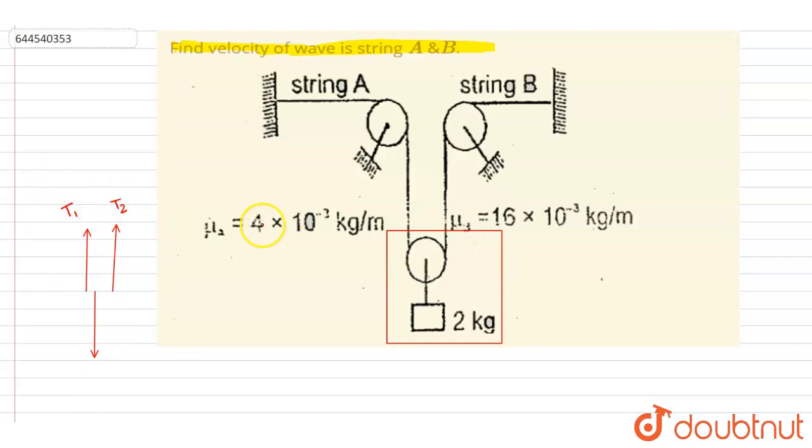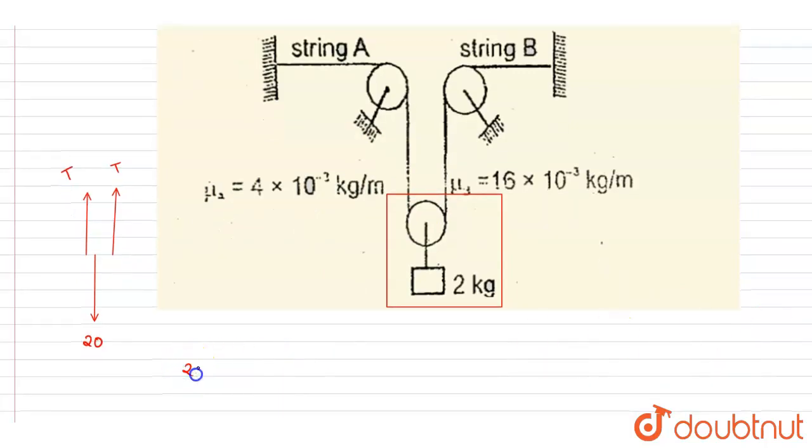Since the string mass per unit length is so small, we can assume the string tension is the same throughout. So we write 2T equals 20, which gives T equals 10 Newton. Now that we have the tension and the mass per unit length, we can write down the velocity in string 1 and string 2.